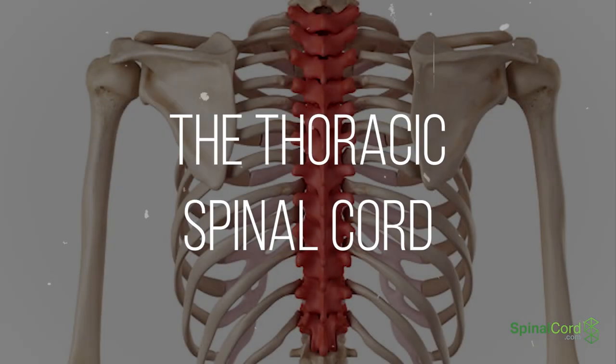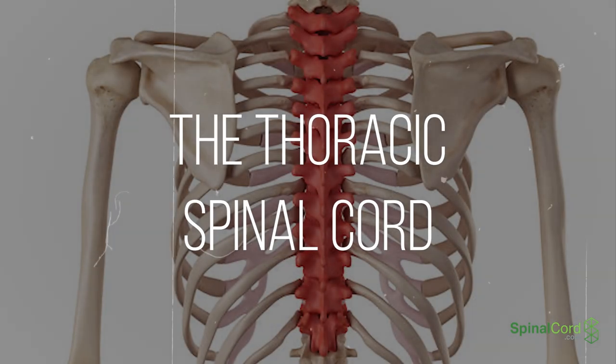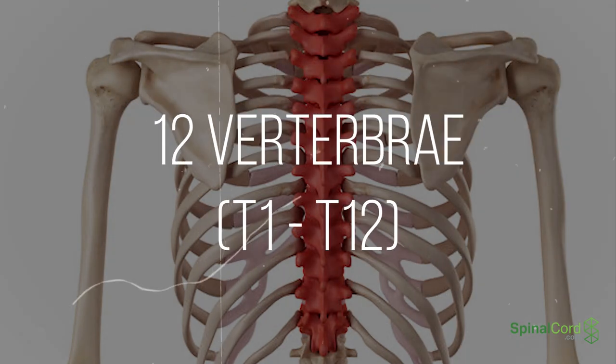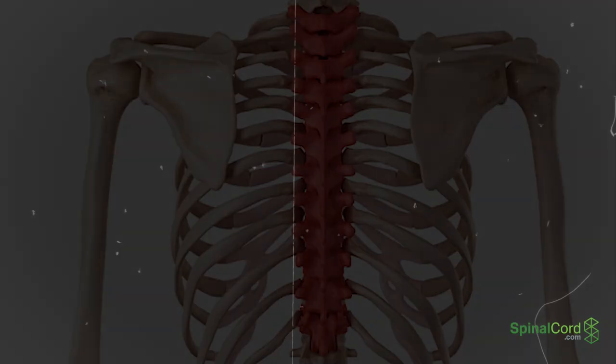The thoracic spinal cord. This section forms the middle of the spinal cord, containing 12 vertebrae, numbered T1 through T12.